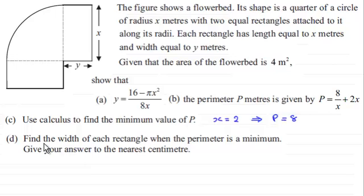And in part d we've now got to go on and find the width of each rectangle when the perimeter is a minimum and give our answer to the nearest centimeter. So if you haven't done this already, I'll give you a moment to pause the video and have a go. Welcome back, so let's have a look now.